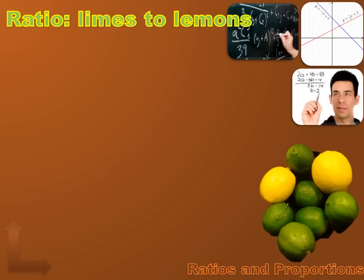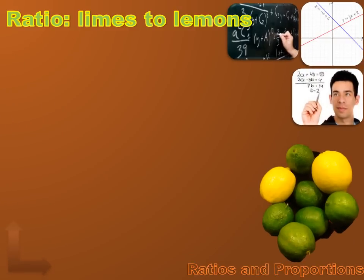Let's start with ratios. What's the ratio of limes to lemons? What does ratio mean, and what do we use a ratio for? We use a ratio to compare the quantities of two different things — in this case, limes to lemons. There are six limes and two lemons, so the ratio of limes to lemons is six to two. Note that order matters: lemons to limes would be two to six, but limes to lemons is six to two.